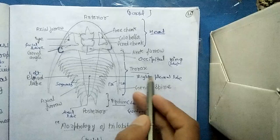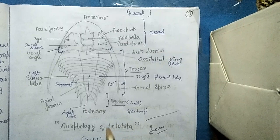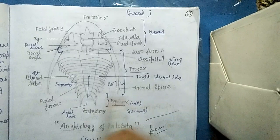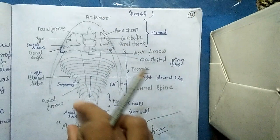These bottom portions are pygidium or tail. This portion is thorax, this much is thorax, and this lower bottom is pygidium or tail. This is the diagrammatic representation, you can see the diagram, you can take screenshots.